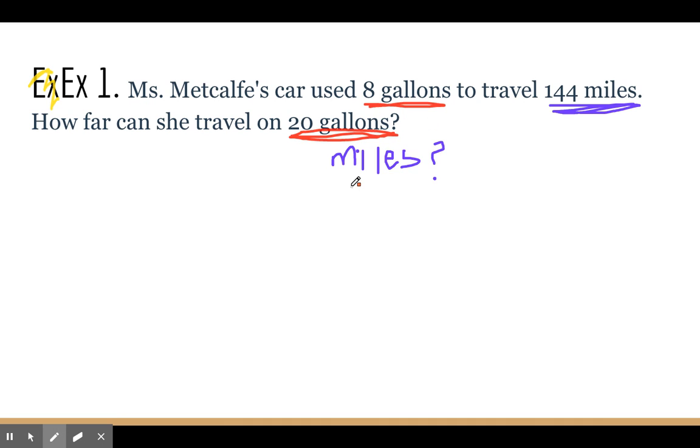We either want the similar units on top or the similar ones on the bottom. We need to match them up right. So we have gallons and miles. I'm going to put gallons on top, so we want it to be gallons over miles equals gallons over miles.